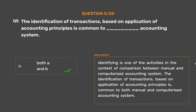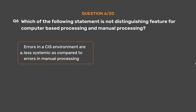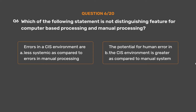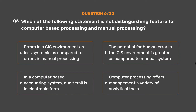The identification of transactions based on application of accounting principles is common to both manual and computerized accounting systems. Question number 6. Which of the following statement is not a distinguishing feature for computer-based processing and manual processing? Option A: Errors in a CIS environment are less systemic compared to errors in manual processing. Option B: The potential for human error in the CIS environment is greater compared to manual systems. Option C: In a computer-based accounting system, audit trail is in electronic form. Option D: Computer processing offers management a variety of analytical tools. The correct answer is Option A.